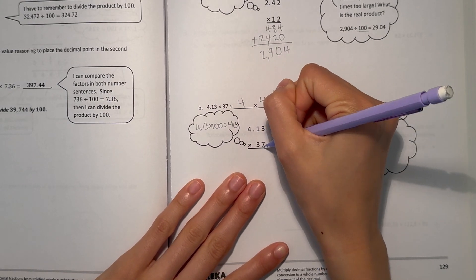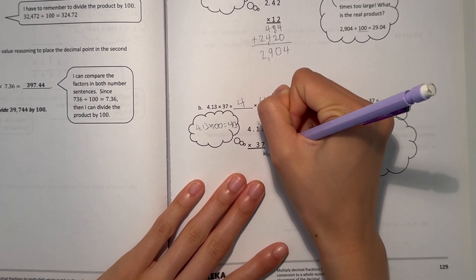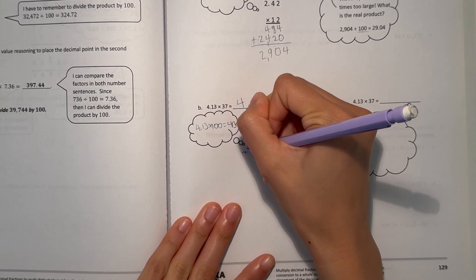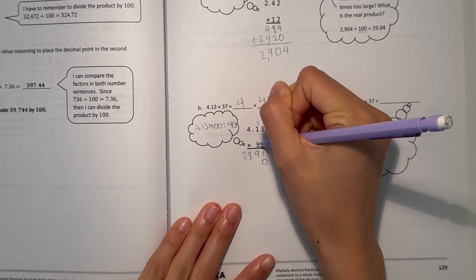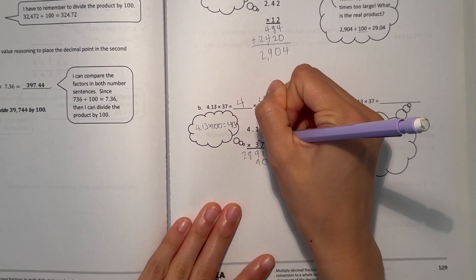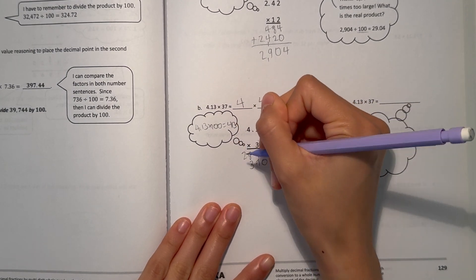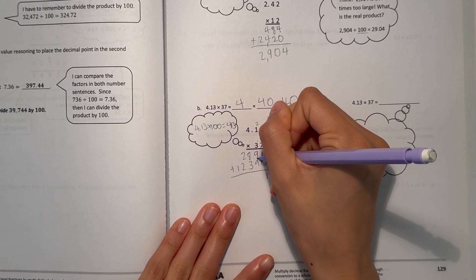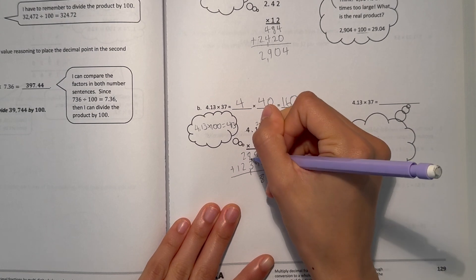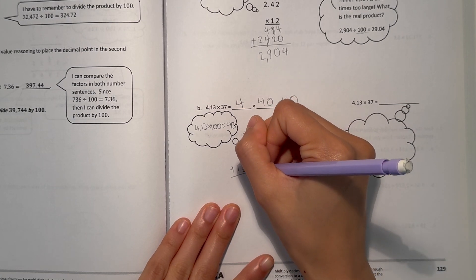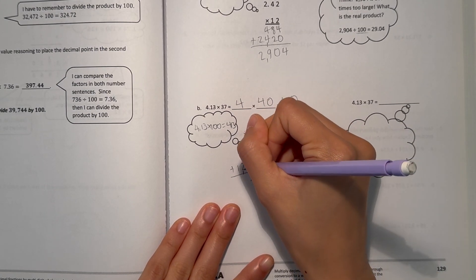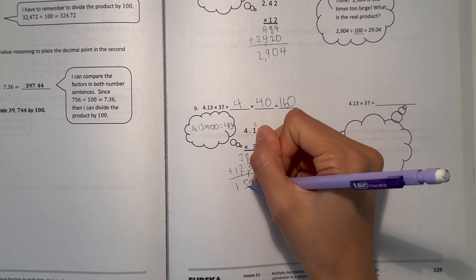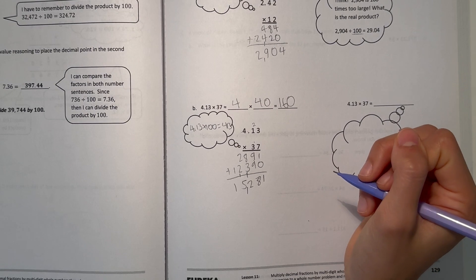So now we pretend this 4.13 is actually 413. Let's multiply. 3 times 7 is 21, 1 times 7 is 7 plus 2 is 9, 4 times 7 is 28. Add a 0. 3 times 3 is 9, 3 times 1 is 3, and 3 times 4 is 12. Now let's add: 1 plus 0 is 1, 9 plus 9 is 18, 8 plus 3 is 11 plus 1 is 12, 2 plus 2 is 4 plus 1 is 5, and 1 is just 1. So 15,281.